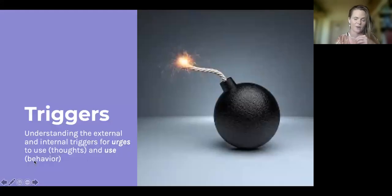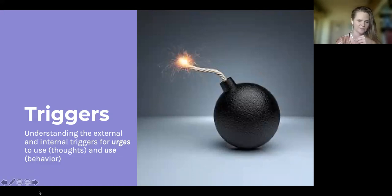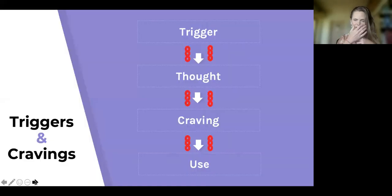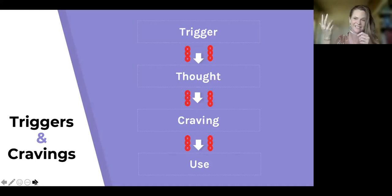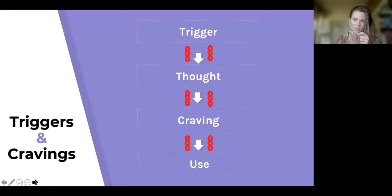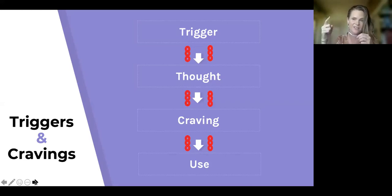Let's go over triggers, which is an important part of the CBT model — understanding both the external and internal triggers that lead to urges and cravings, which lead to the behavior of use. With triggers and cravings, we're looking at an event chain that starts with the trigger. The trigger is not always obvious — patients will often say it came out of nowhere. It could be external, like seeing foil, or internal, like a memory associated with a traumatic event or just an emotion. That leads to a thought which, if not interrupted, leads to a craving or urge, and if not interrupted, leads to use. You want to start as high up on the chain with the intervention as you can.